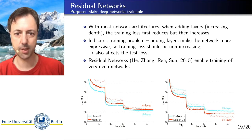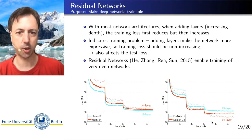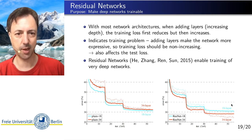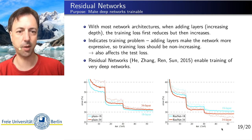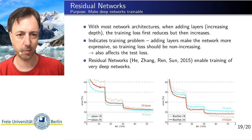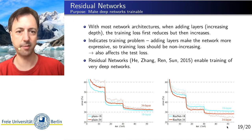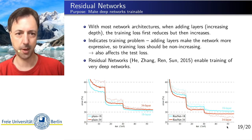With ResNet — residual neural networks — we actually get that. We get similar performance for the 18-layer neural network, but significantly better performance for the 34-layer network. So we have solved the training problem there.